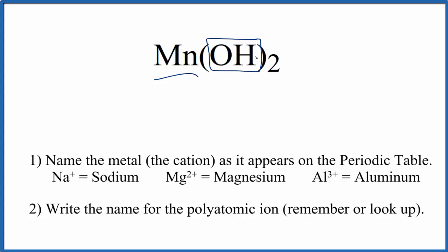It's a group of nonmetals. We have two hydroxide ions. So because we have the metal and this group of nonmetals, we'll use these rules to write the name for Mn(OH)₂. First, we write the name for the metal as it appears on the periodic table: Mn, that's manganese.